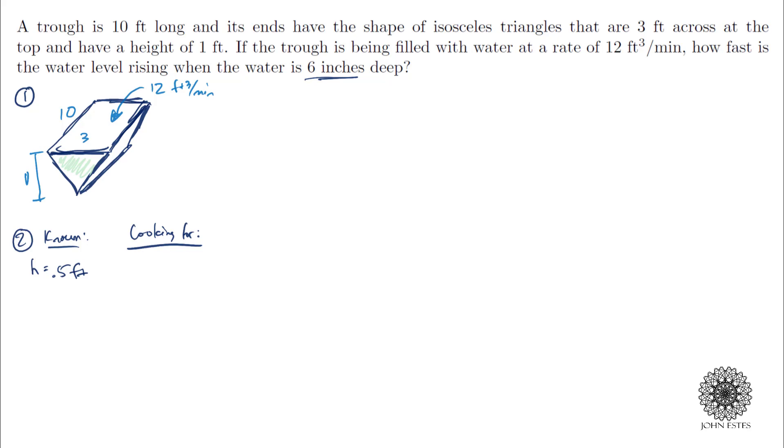We also know that the length of this trough is 10 feet. But what about this value here, this 12 cubic feet per minute? So that is, if you notice there's a keyword rate there, that is a change in volume. And how do I know it's a volume? Because it's 12 cubic feet. So I have 12 cubic feet per minute.